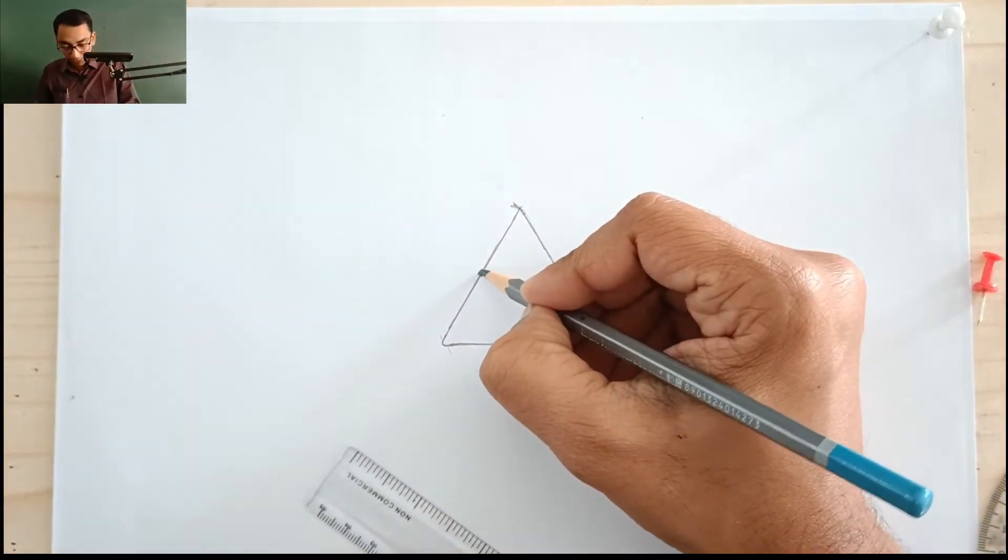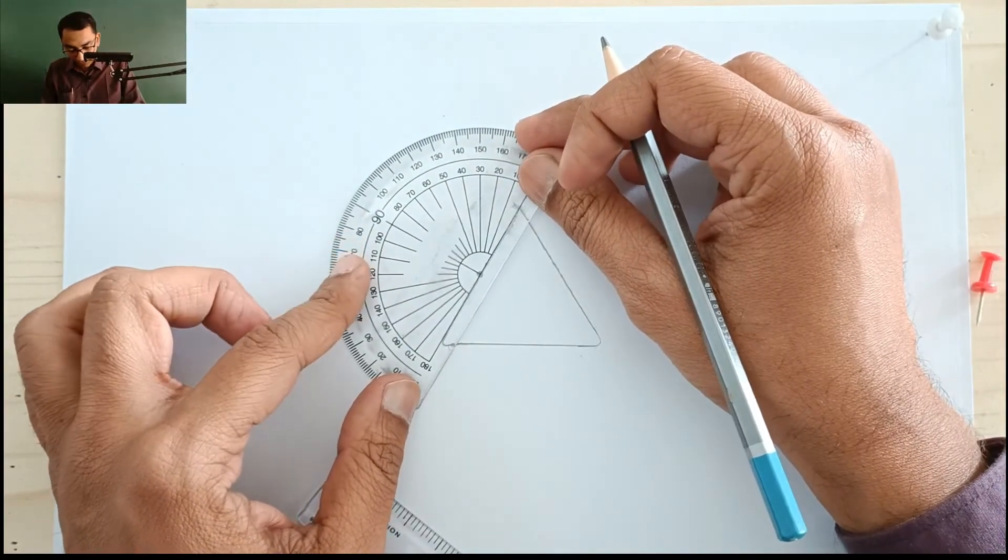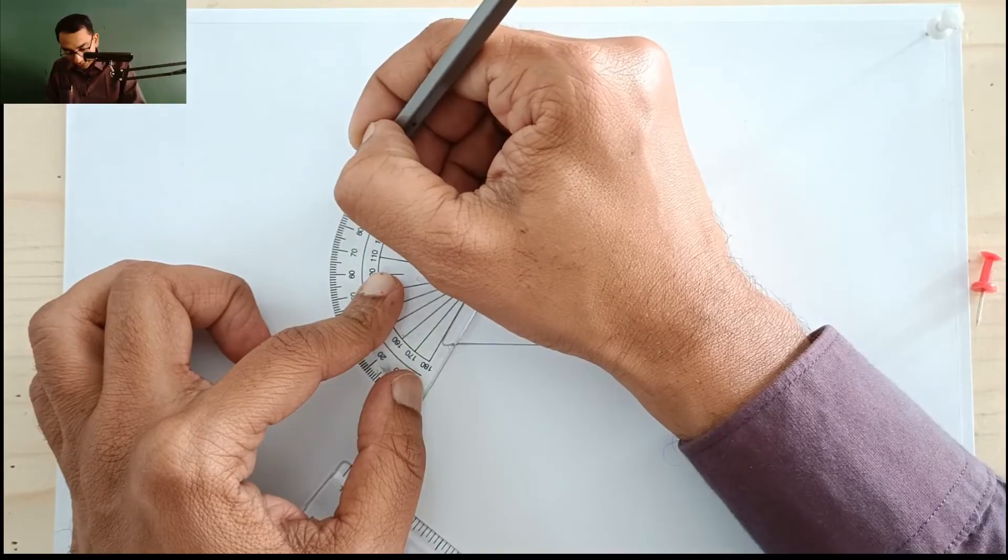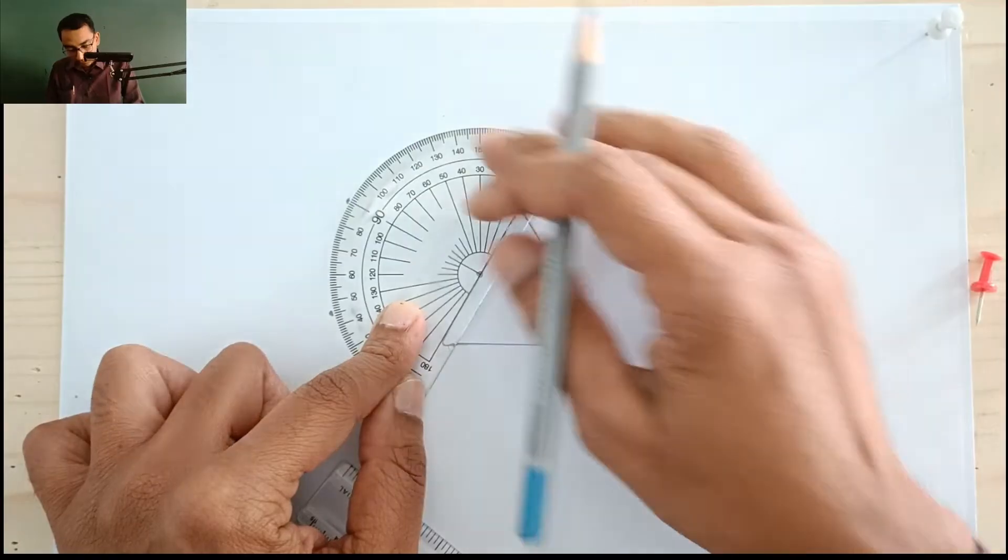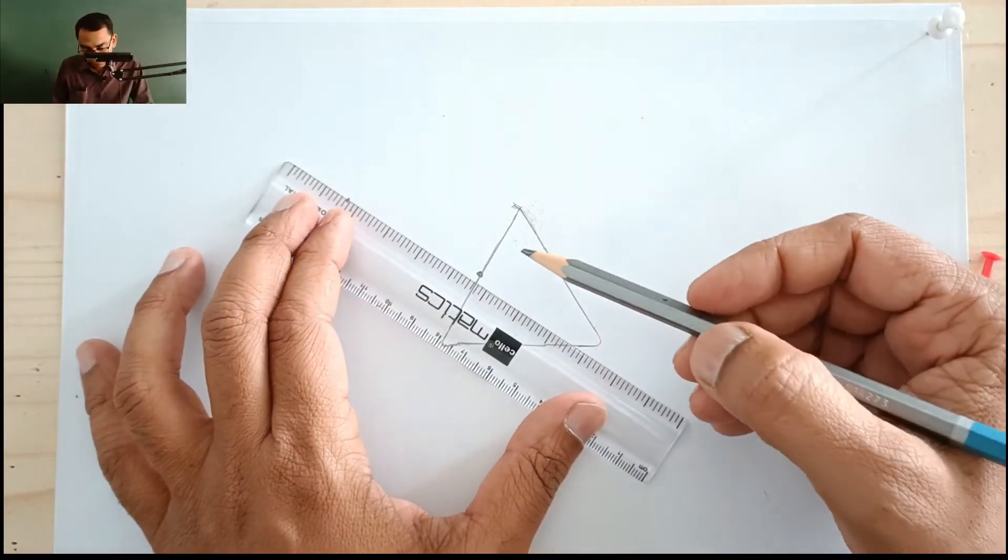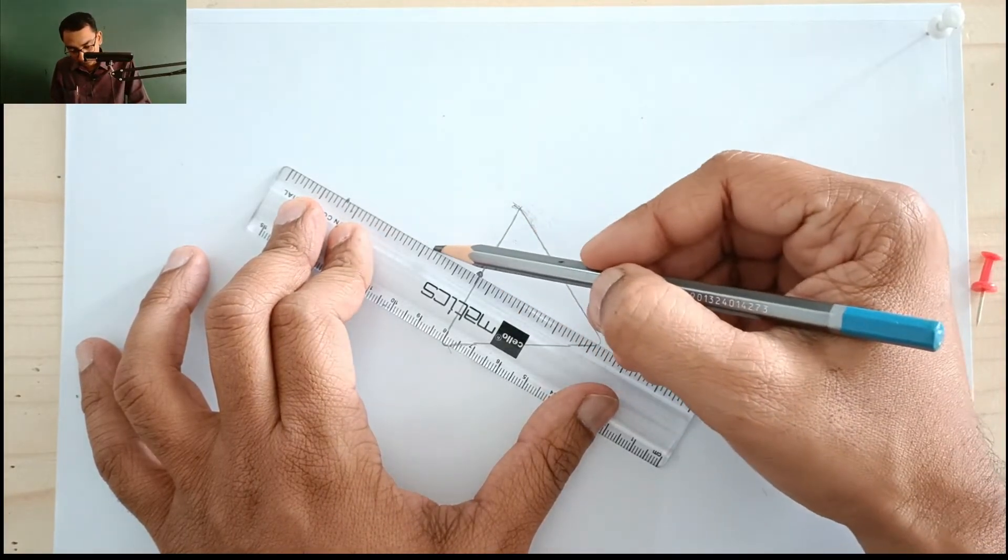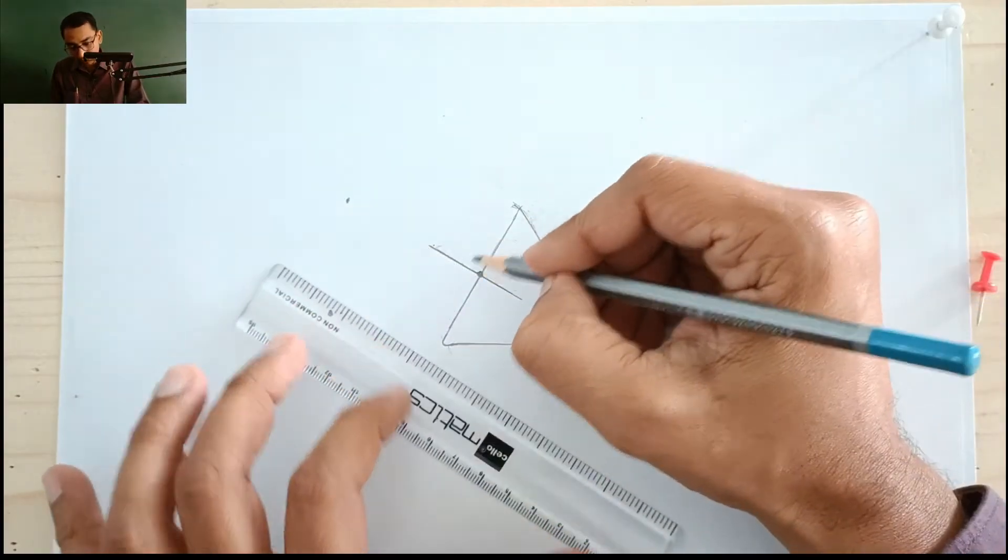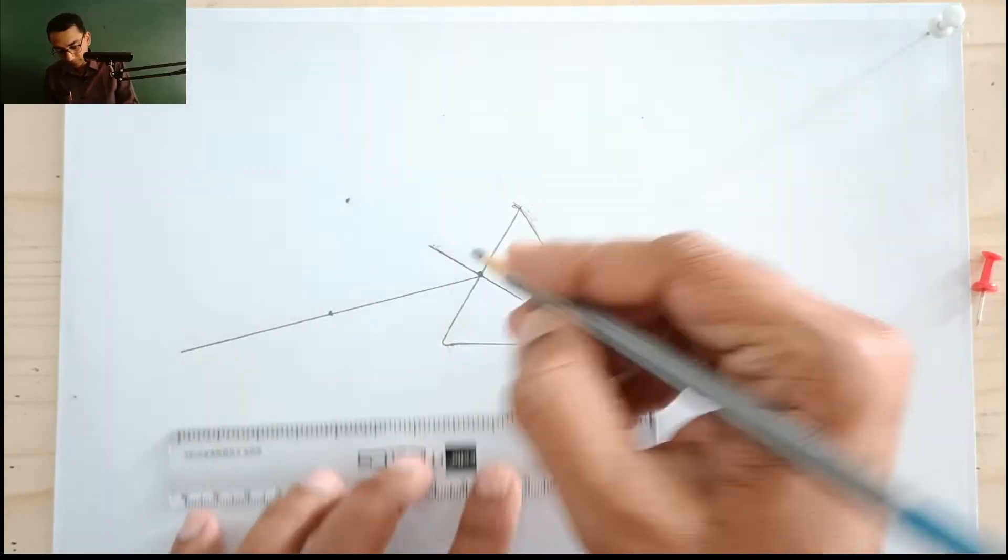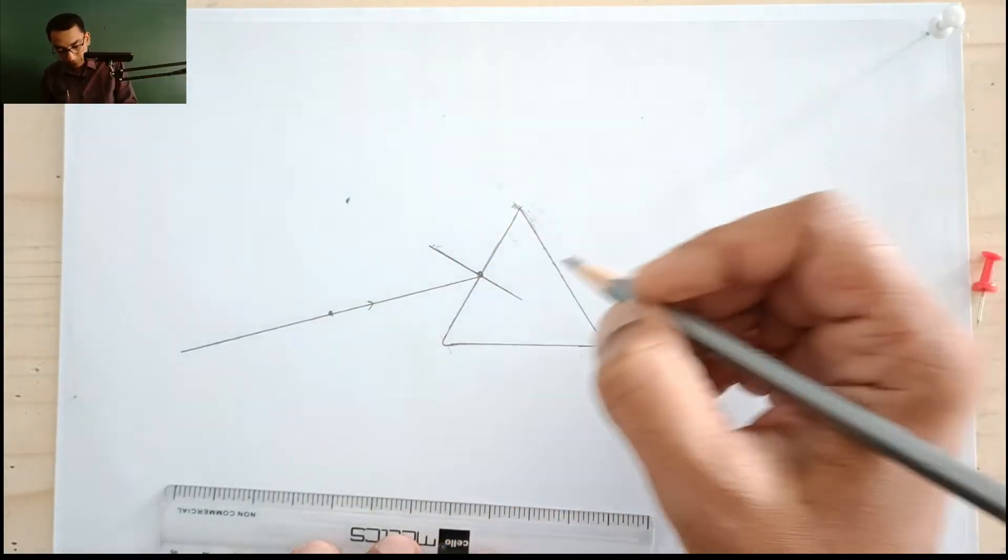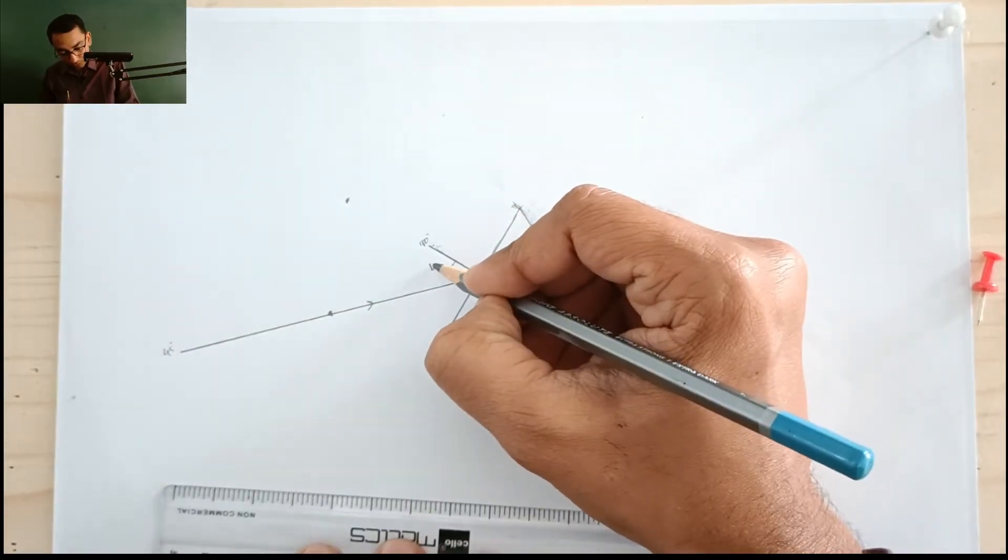Now exactly at the center I am going to make a dot. Then I am going to place the protractor and one dot I am going to make it at 90 degrees, another at 45 degrees. This line is the normal which is perpendicular to the surface. Now this is going to be my incident ray. This is 90 degrees, this is 45 degrees. So the angle of incidence is 45 degrees.